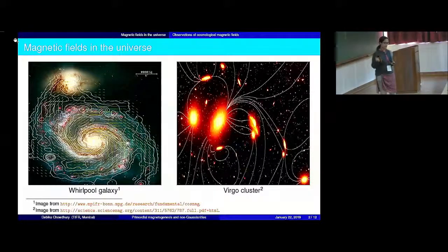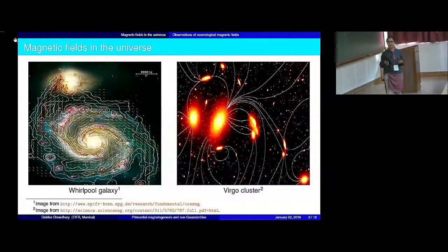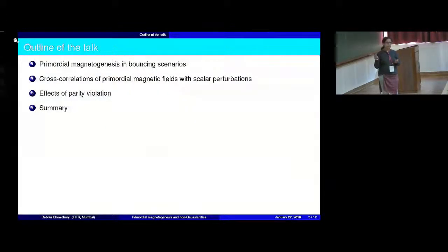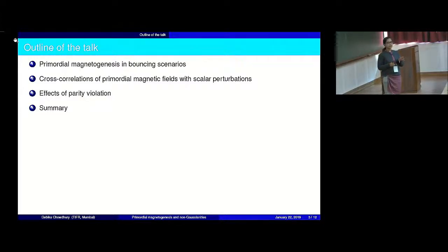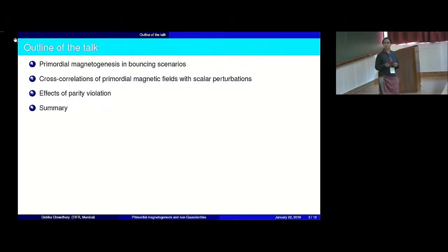What I will explain here is how we can obtain such scale invariant magnetic fields in bouncing scenarios as well, and thereafter I will go on to discuss how we can evaluate the three-point functions involving these magnetic fields and primordial scalar perturbations. This is the outline of my talk: first I will briefly discuss the generation of primordial magnetic fields in bouncing scenarios, then I will show how we can evaluate the cross-correlations of these magnetic fields with primordial scalar perturbations, and after that I will show the effects of parity violation — how the introduction of a parity violating part in the electromagnetic action can change the behavior of these magnetic fields and lead to the production of helical magnetic fields, and thereafter the cross-correlations involving these helical magnetic fields with the scalar perturbations.